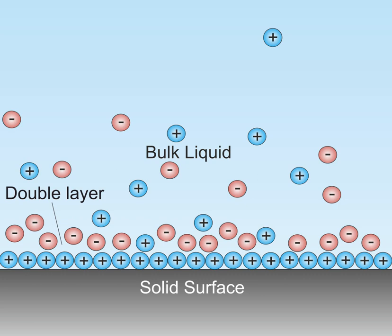The Gouy-Chapman model fails for highly charged DLs. In 1924 Otto Stern suggested combining the Helmholtz model with the Gouy-Chapman model. In Stern's model, some ions adhere to the electrode as suggested by Helmholtz, giving an internal Stern layer, while some form a Gouy-Chapman diffuse layer. The Stern layer accounts for ions' finite size and consequently an ion's closest approach to the electrode is on the order of the ionic radius.